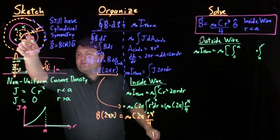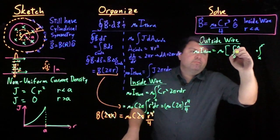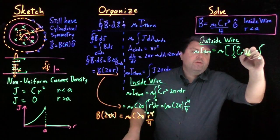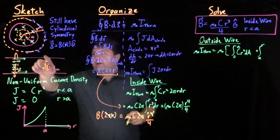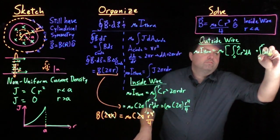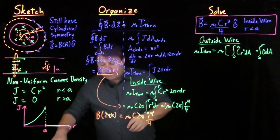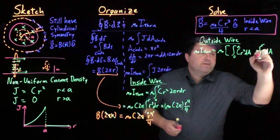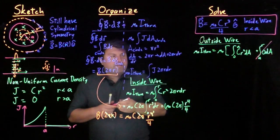And so our current density in this first region is cr squared, and luckily enough for us, out in the second region, it's 0. So any definite integral of 0 is 0, so we don't have to worry about that.